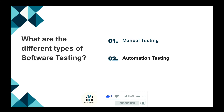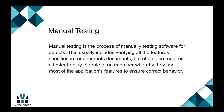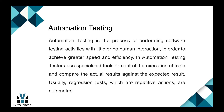There are two types of software testing: manual testing and automation testing. Manual testing is the process of manually testing software for defects. This usually includes verifying all the features specified in requirement documents, but often also requires a tester to play the role of an end user.